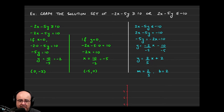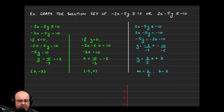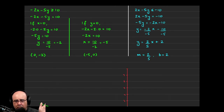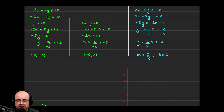For this problem, I find that finding intercepts is easiest because 2 and 5 both go into 10 evenly. That said, if we solve 2x minus 5y equals negative 10 for y, we subtract 2x to get negative 5y equals negative 2x minus 10, then divide everything by negative 5. Negative 2 over negative 5 gives us positive 2 fifths x, and negative 10 over negative 5 gives us positive 2. So the slope is 2 fifths and the y intercept is 2.